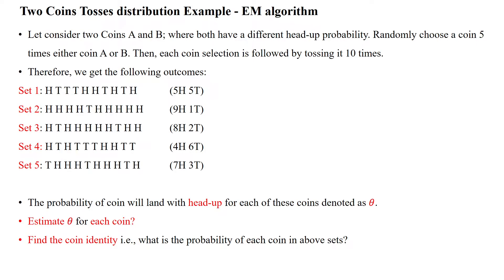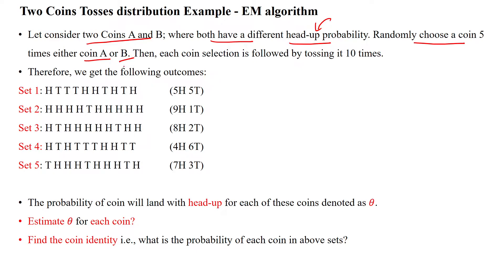This video gives an example of the Expectation Maximization algorithm. Here, we consider two coins A and B, where both have different head probabilities when you are tossing the coin. What is the probability of getting heads by randomly choosing a coin five times? Either it may be coin A or coin B.